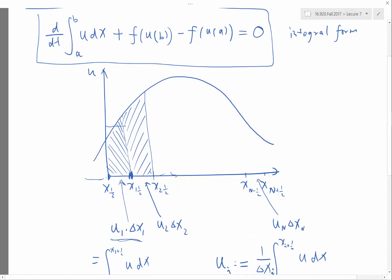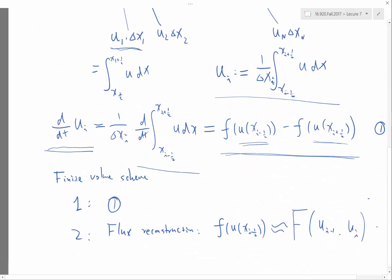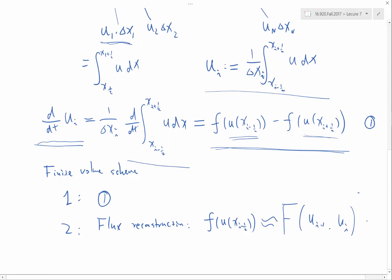In this case, when people care about satisfying the conservative properties numerically, they use finite volume schemes because this flux reconstruction is applied both for dU_i/dt and also for dU_{i-1}/dt. The same reconstructed flux is used for the left interface and the right interface, for the left cell and the right cell.